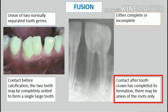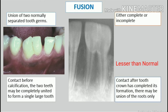If contact of teeth occurs later, when a portion of the tooth crown has completed its formation, there may be union of the roots only. Tooth count reveals a missing tooth when the anomalous tooth is counted as one. Higher frequency in the anterior and maxillary regions.